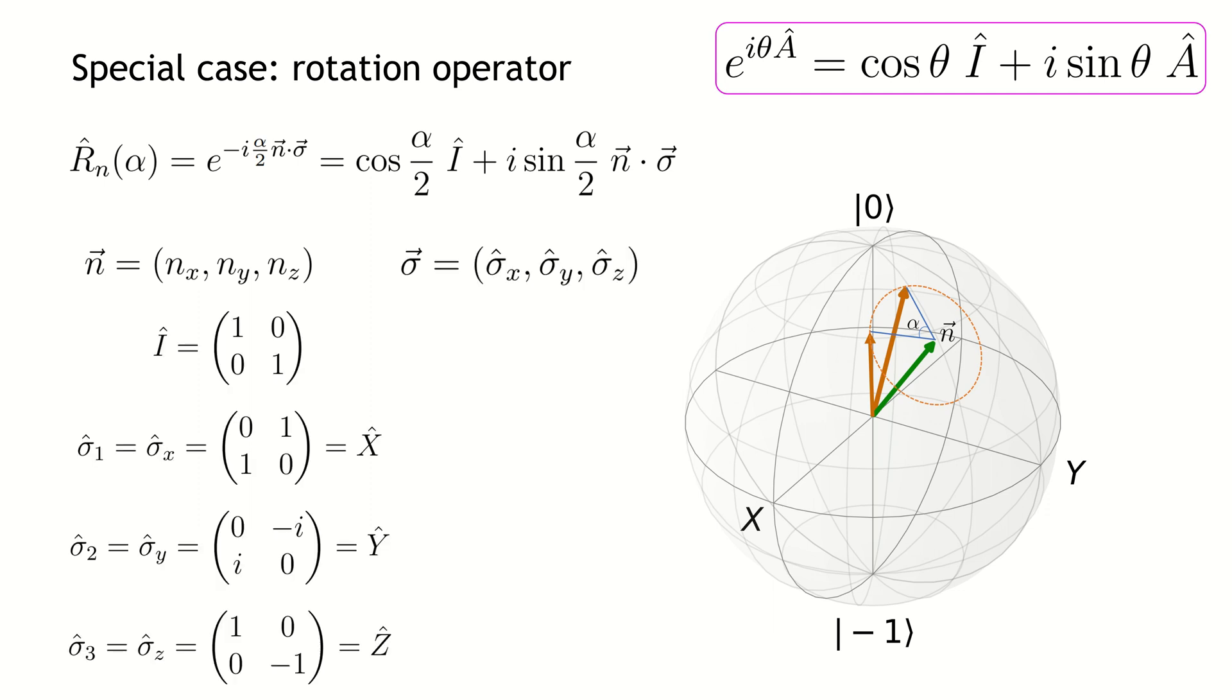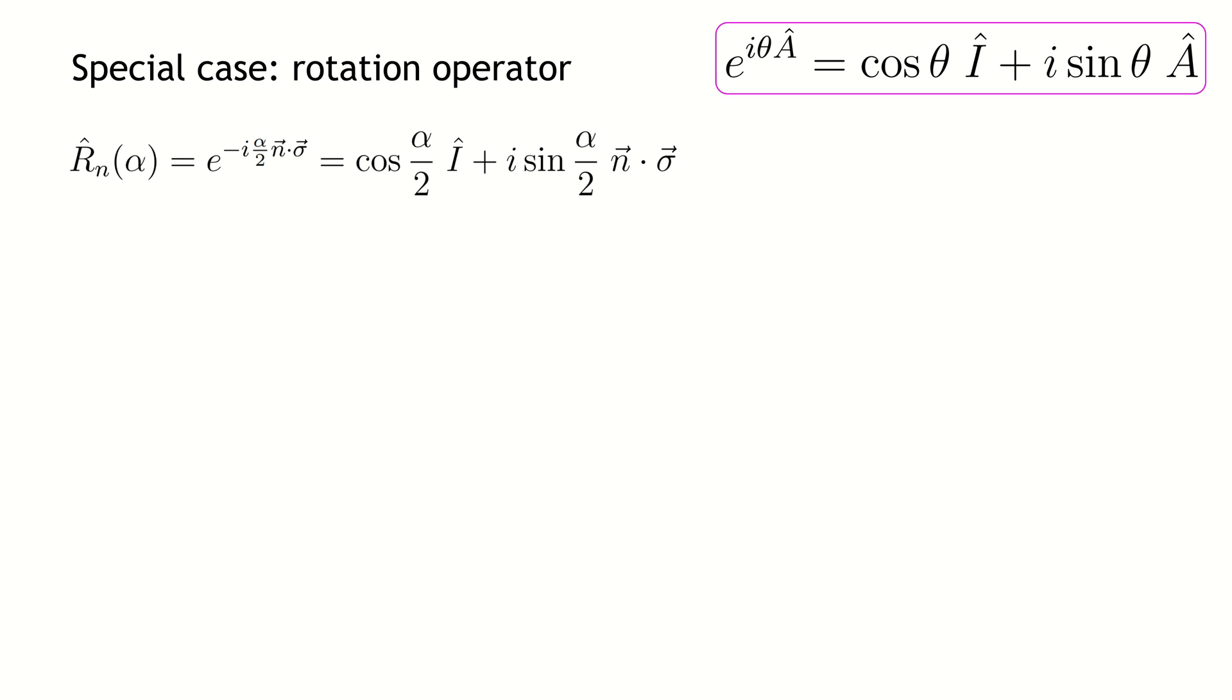Vector sigma denotes the Pauli vector. N sigma is an operator, which we denote as operator A. To be able to use the formula which we recently derived, it is sufficient to show that this operator is self-inverse.